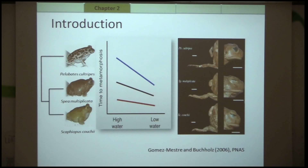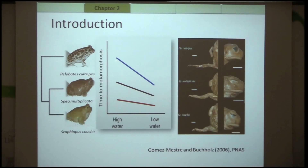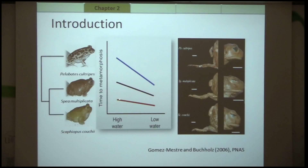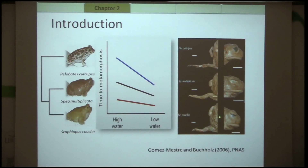To answer such questions, we use the system of the spadefoot toads. Using ancestral reconstruction, we can assess that the ancestral state of this species group was closer to Pellobates cultripes, with higher phenotypic plasticity — they can decrease their larval period significantly in response to pond desiccation. Spea multiplicata has an intermediate level of phenotypic plasticity, whereas Scaphiopus couchii has almost lost its ability to accelerate development. This results in changes in morphometrical allometry upon metamorphosis: Scaphiopus couchii has shorter hind limbs and blunter snouts, while Pellobates cultripes has longer hind limbs and higher snouts.